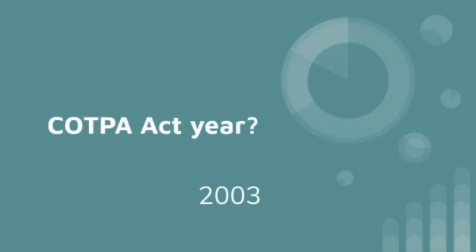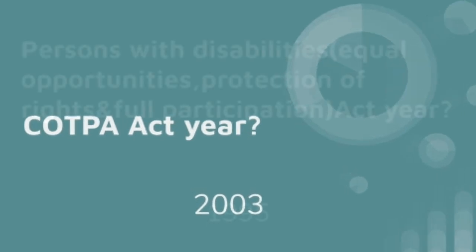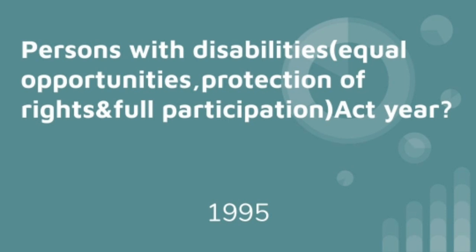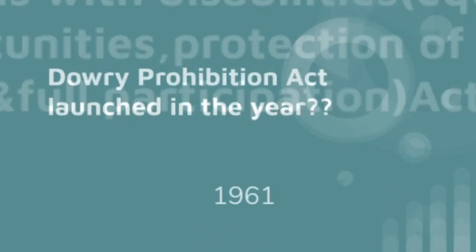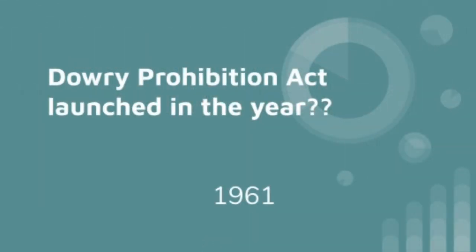The KOTPA Act was formed in the year 2003. Person with Disabilities Equal Opportunities Protection of Rights and Full Participation Act was launched in the year 1995. The Dowry Prohibition Act was launched in the year 1961.